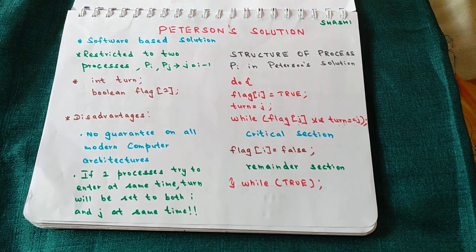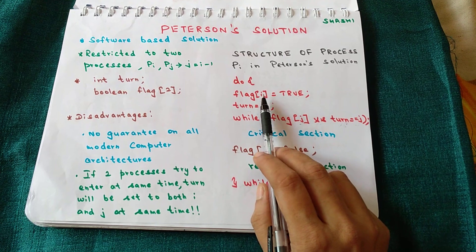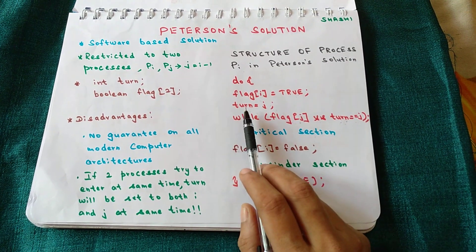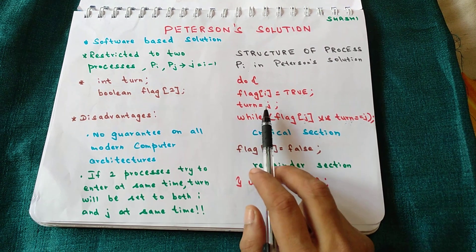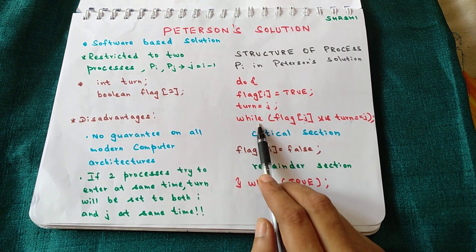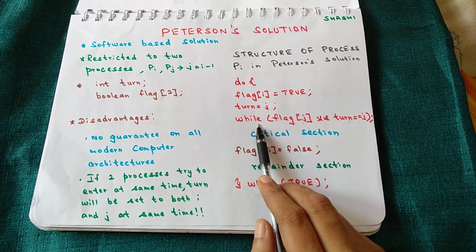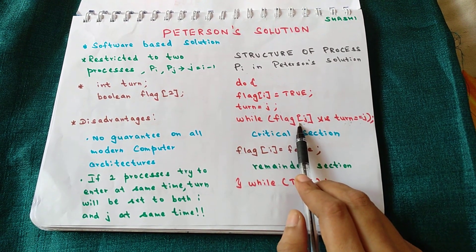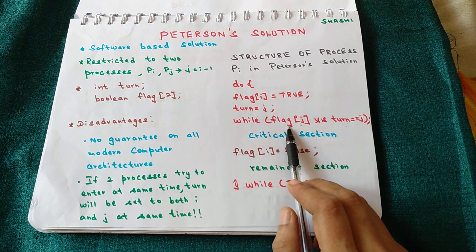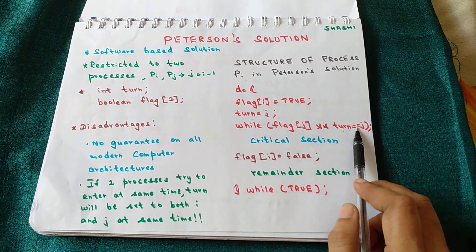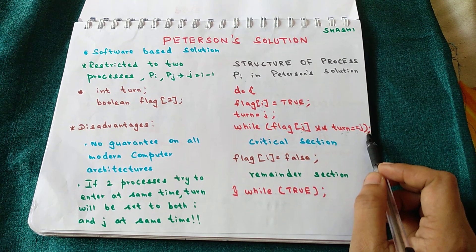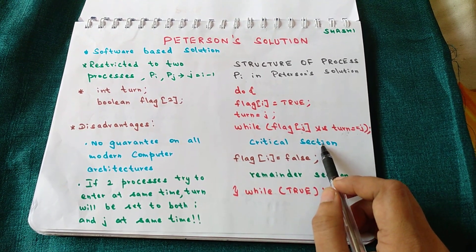Consider any process Pi. When Pi wants to enter the critical section, it sets its `flag[i]` to true, then sets the `turn` variable to j — indicating that if process Pj wants to enter the critical section, it can do so. Then Pi executes a while loop that checks whether `flag[j]` is true and whether `turn == j`. When both conditions are true, Pi gets stuck in an infinite loop and cannot enter the critical section.